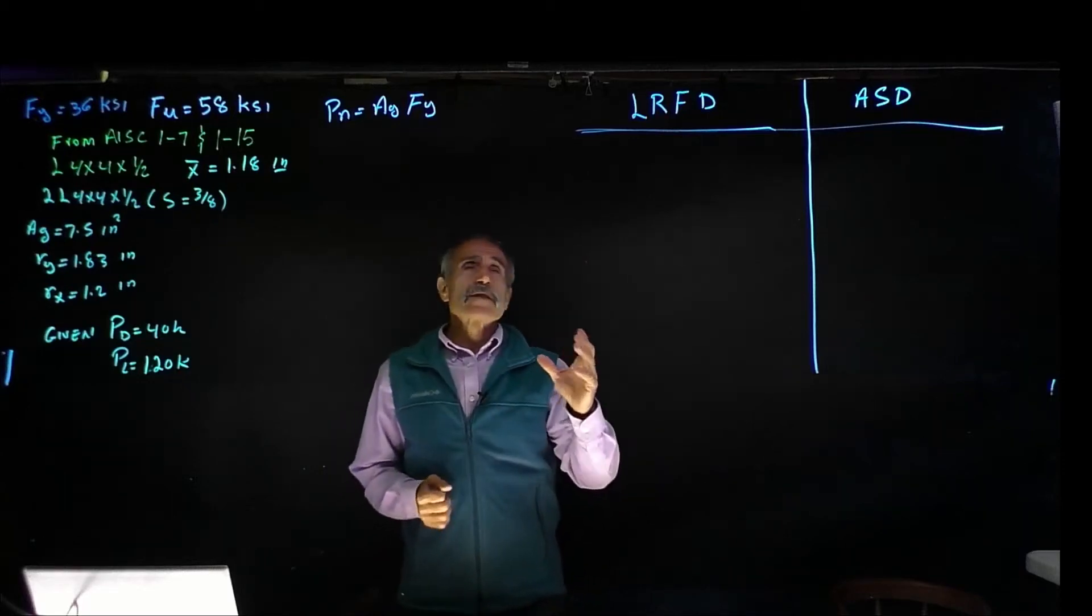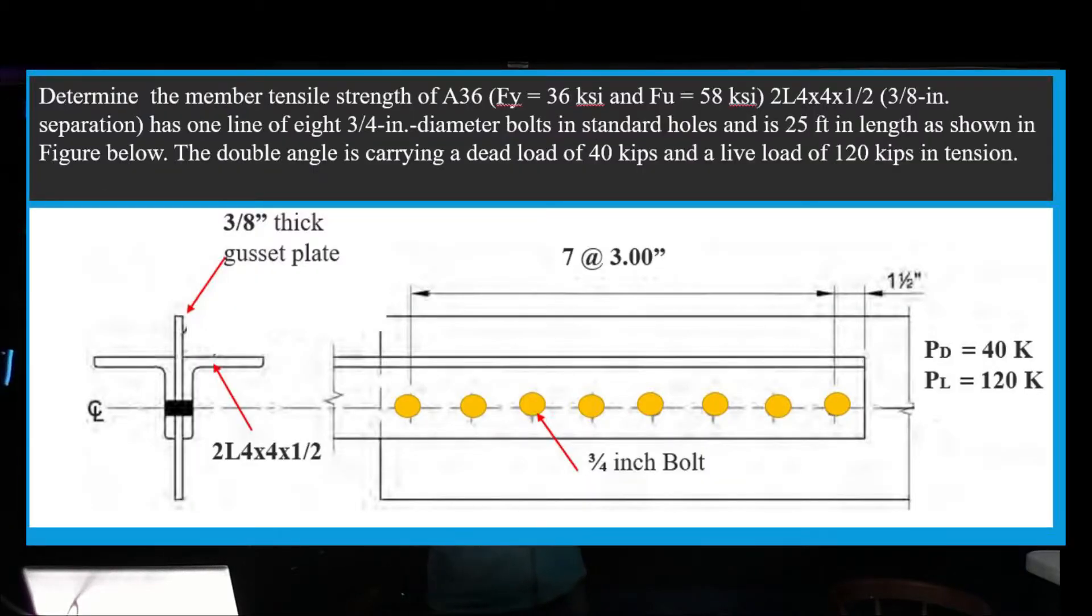Welcome back. Let's take a look at the problem we have on the board. We're going to design a tension member in steel design. We want to find out the strength of this double angle and connect it to a 3/8 inch thick gusset plate. The connection has about seven different holes and 3/4 inch diameter bolts.